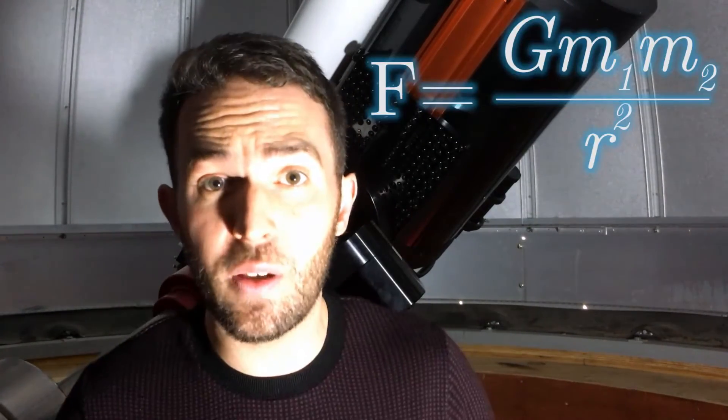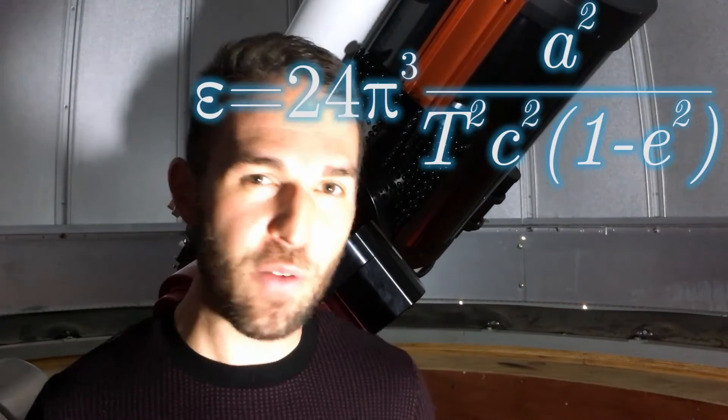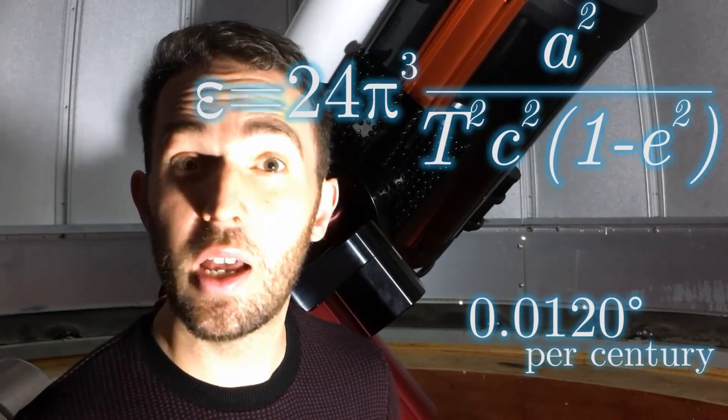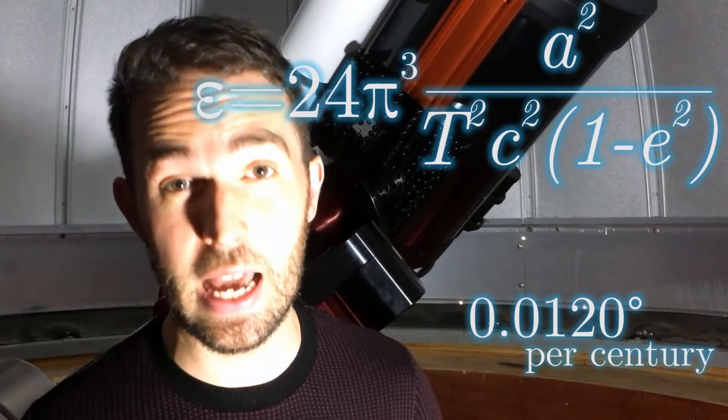It's staggering that we can actually measure this and we know exactly what causes it. Newtonian effects of the gravitational pull of the other planets can account for most of it, but not all. You need a general relativistic correction to completely account for that precession of Mercury's orbit. That's exactly what Einstein calculated.